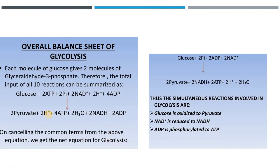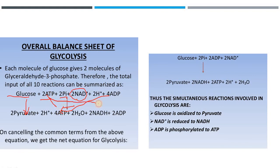Looking at the overall balance sheet: one molecule of glucose reacts and two ATPs are consumed. In step 7, two inorganic phosphates and two NAD+ are utilized — NAD+ is reduced to NADH — and four ADP are converted to four ATP. Glucose is converted to two molecules of pyruvate, net two ATP are produced (four minus two), and two NADH are generated.